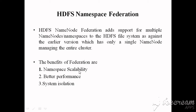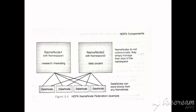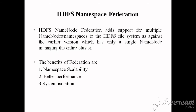For namespace scalability: in this federation, you can have more than one name node and more than one namespace, so the HDFS cluster scales horizontally. As you can see in the diagram, having more than one name node means it scales horizontally without placing any burden on the cluster.